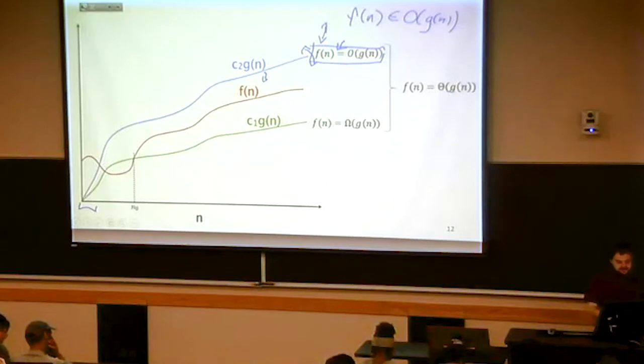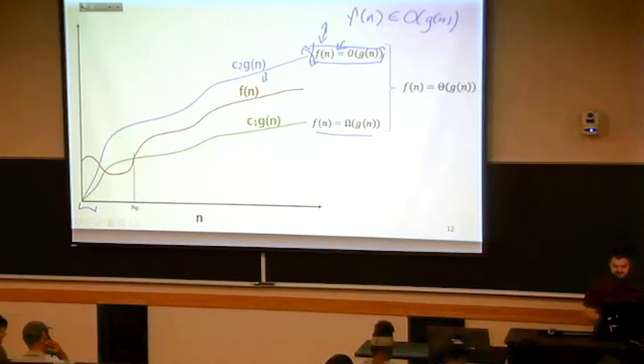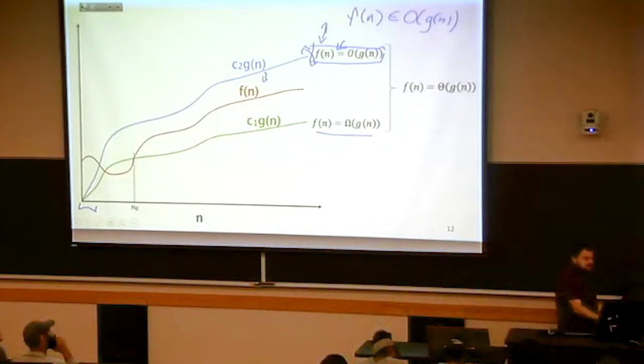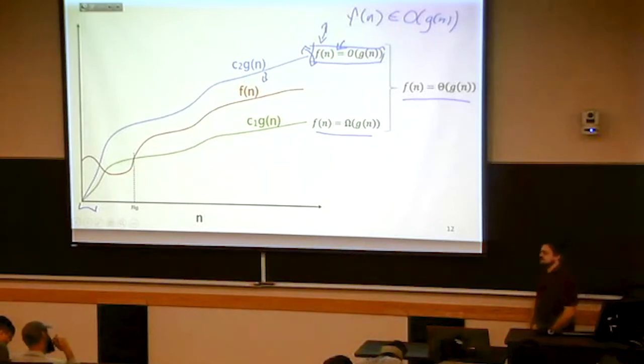On the other hand, if there is some way that I can sort of tilt and shift G so that eventually G will forever be underneath F, that means F of N belongs to big omega G of N. If I can do both, potentially for different amounts of shifting and so forth, shifting and tilting. So if I can do both for different amounts of shifting and tilting, then I conclude that F of N is big theta of G of N.